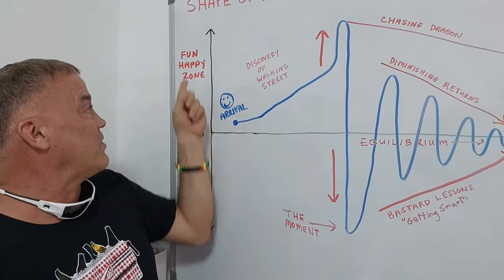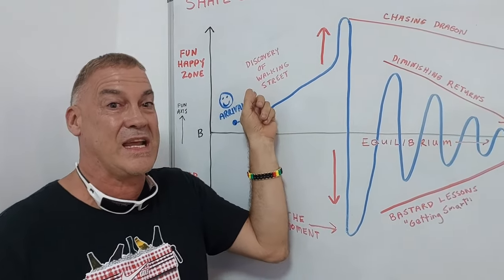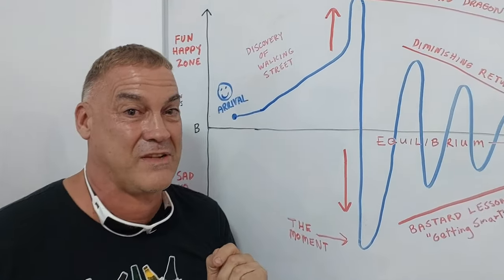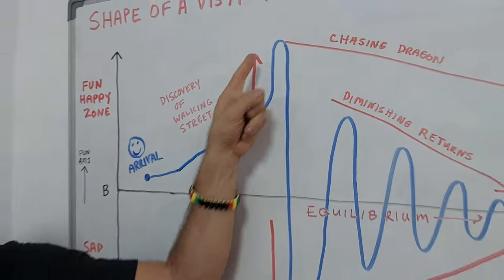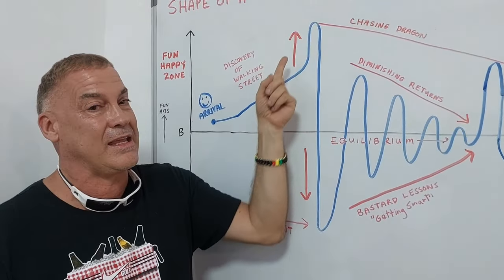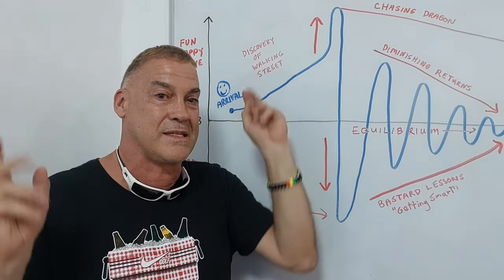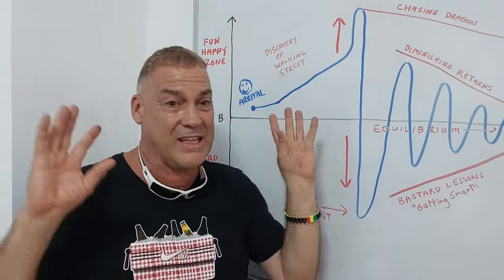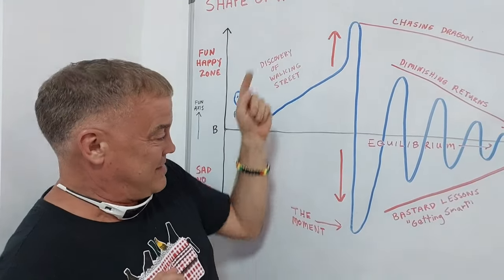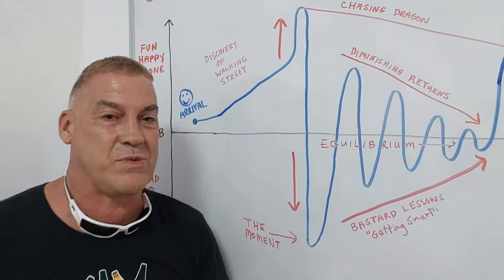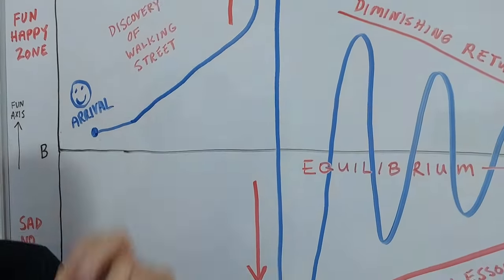Fun happy zone. Oh, you discover Walking Street, the entertainment district of Angeles City. It's the number one entertainment district of all of the Philippines, so your excitement and happy. You experience the bars and beautiful sexy Filipina girls and the dancers and the shows and all this, the lights, and you're like woohoo I'm happy. And then the moment hits.